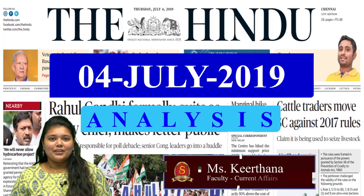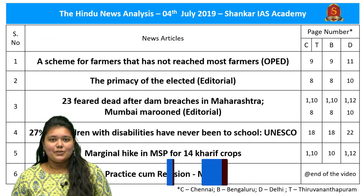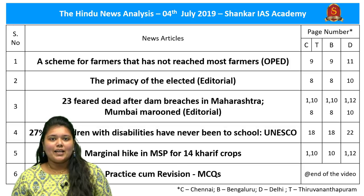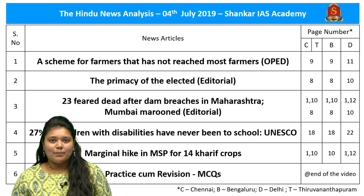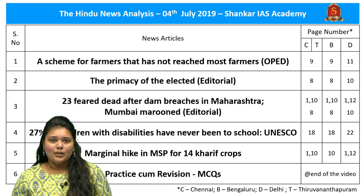Good evening, aspirants. Welcome to the Hindu News Analysis by Shankar IAS Academy for the date 4th July 2019. The list of articles chosen for today's analysis, along with page numbers of Chennai, Bengaluru, Delhi and Thiruvananthapuram editions, is provided here. The link for the notes in PDF format and the timestamping for news articles has been provided in the description box below, and for the benefit of smartphone users, the timestamping is also provided in the comments section.